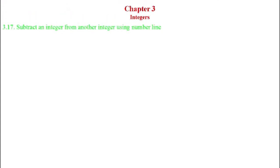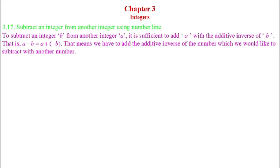To subtract an integer B from another integer A, it is sufficient to add A with the additive inverse of B. That is: A minus B equals A plus (minus B), because minus B is the additive inverse of B. To subtract an integer from another integer, we have to add the additive inverse of the number which we would like to subtract.